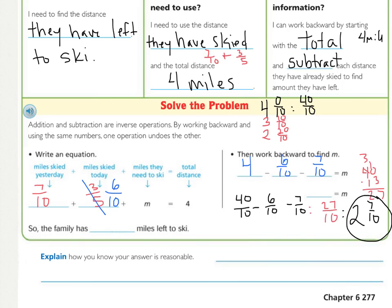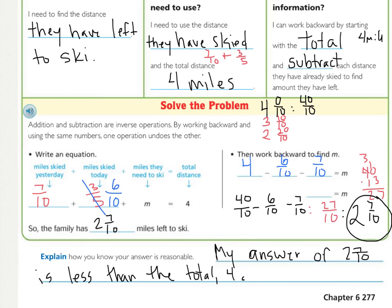27/10 is an improper fraction, which we don't want as a final answer — we need simplest form. 27 divided by 10 goes 2 times with 7 tenths left over. That cannot reduce, so our final answer is 2 and 7/10. That means the family had 2 and 7/10 miles left to ski. We can confirm this is reasonable because the answer is less than the total of 4 miles.